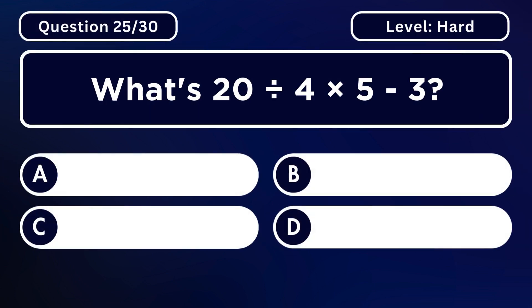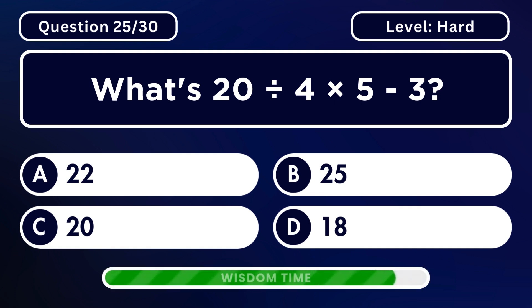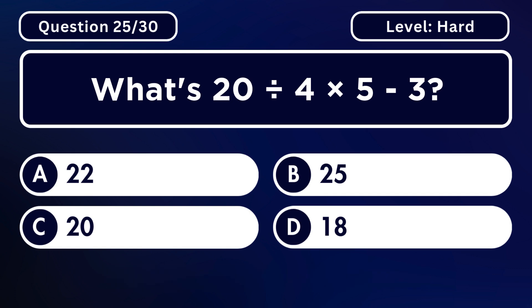What's 20 divided by 4 multiplied by 5 minus 3? Answer A. 22.